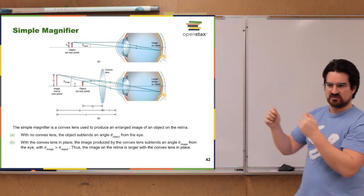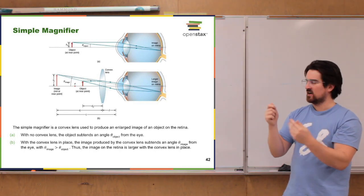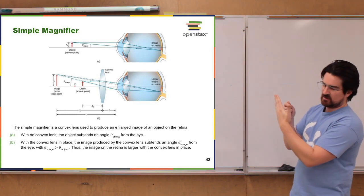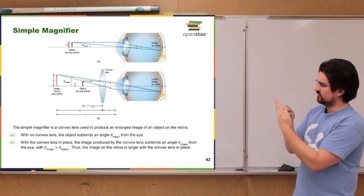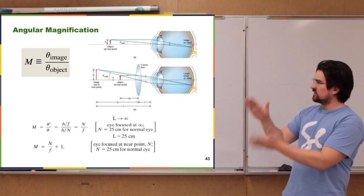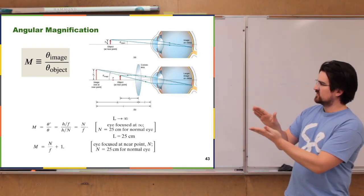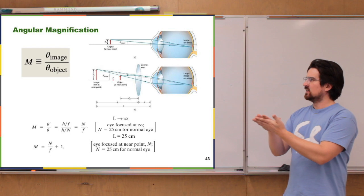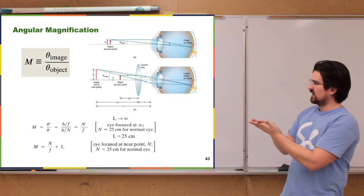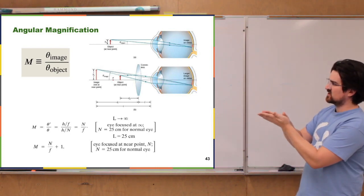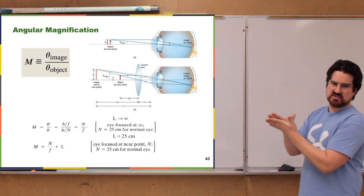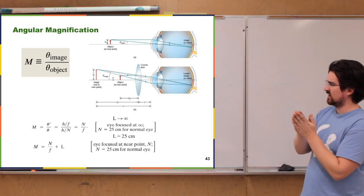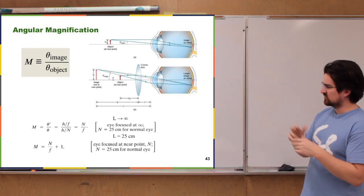So that's how a simple convex lens can be used as a magnifier — you have it between your eye and the object, with the object right behind the lens. For angular size or apparent size, we can define an angular magnification as the angle that the image takes up in your vision versus the angle that the object takes up. It's very similar to linear magnification, except with angles.